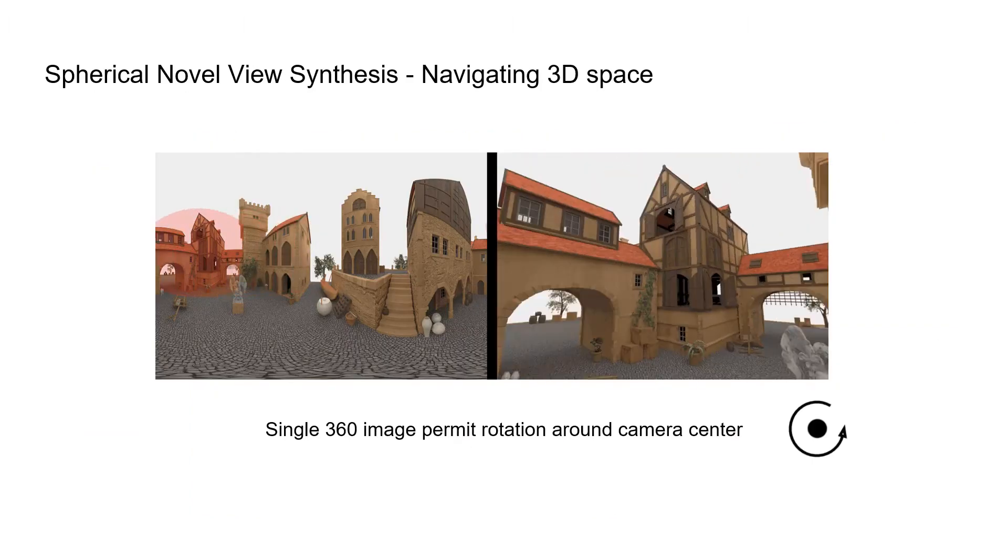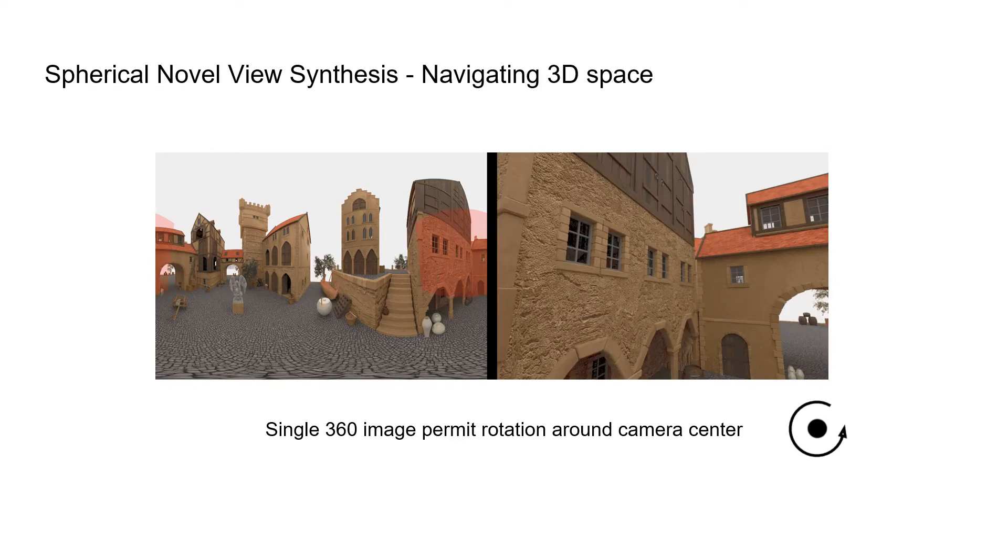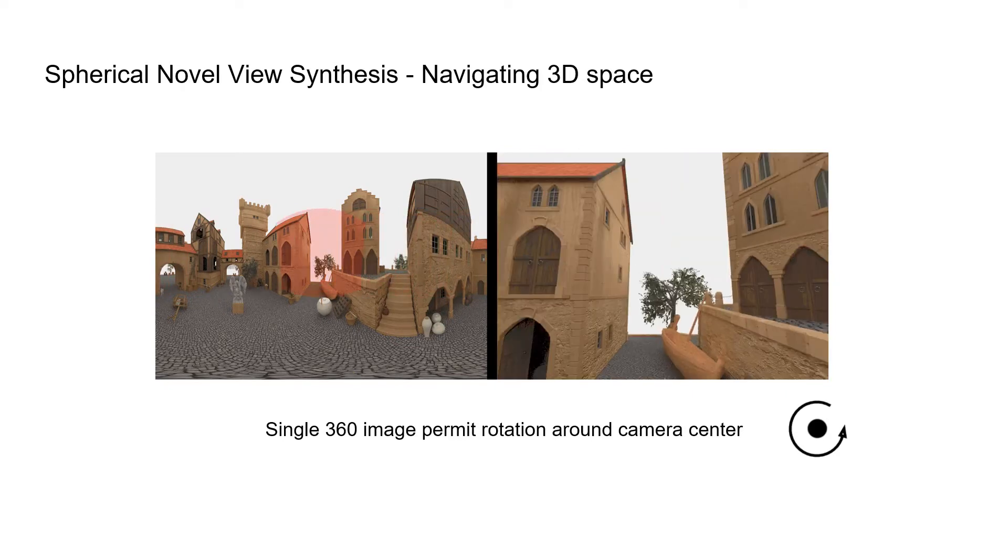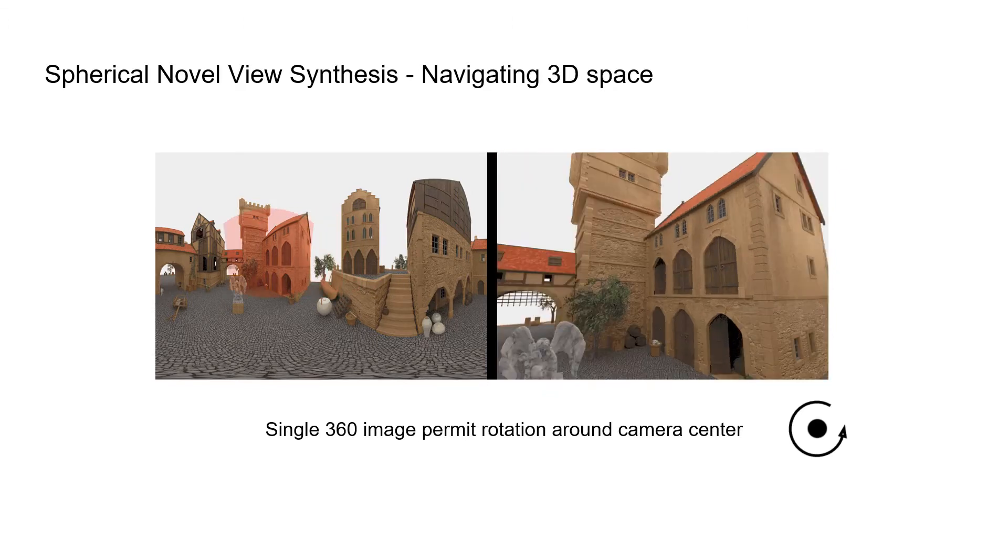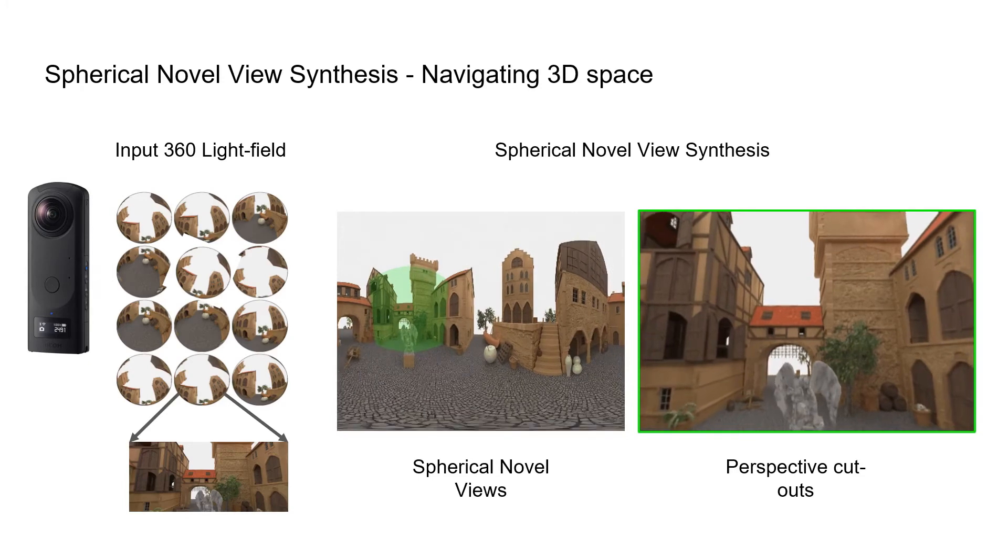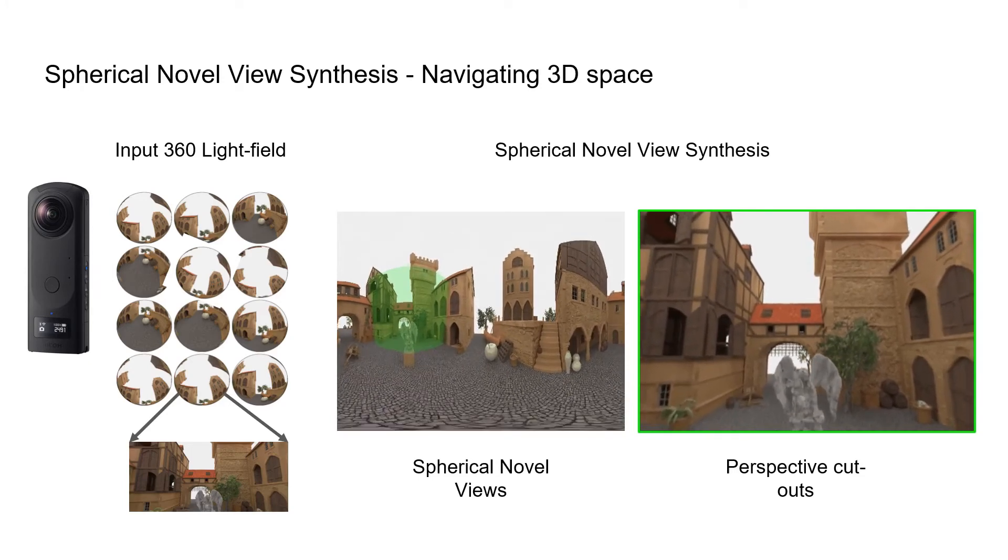A single 360 image allows only rotations around the camera center, which lacks motion parallax cues that are essential for immersive VR experiences. Novel view synthesis techniques aim to complement 360 images by allowing extra degrees of freedom for translations.